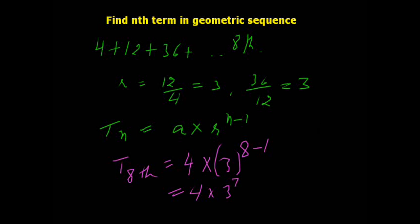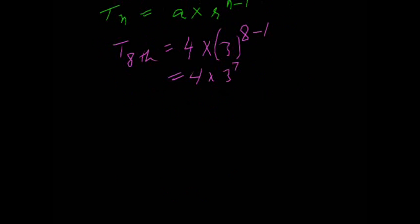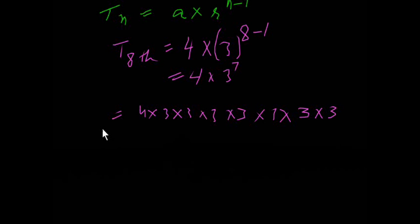We have to show 3 seven times: 4 into 3, 3, 3, 3—that's 1, 2, 3, 4, 5, 6, and 7. After multiplying, this gives 2187, and the total will be 8748 after multiplying the 2187 with 4.